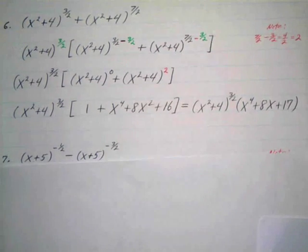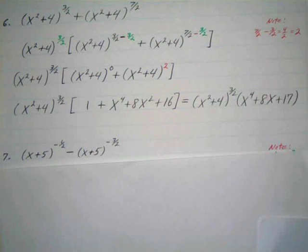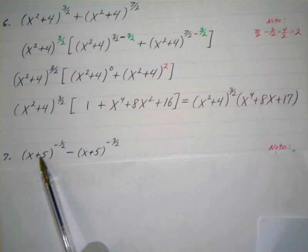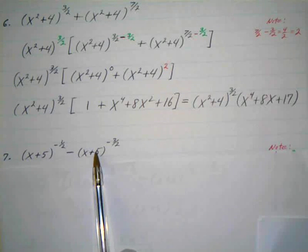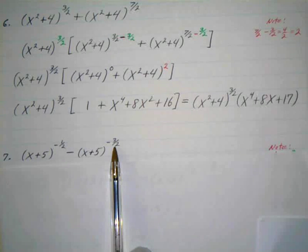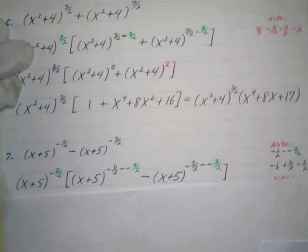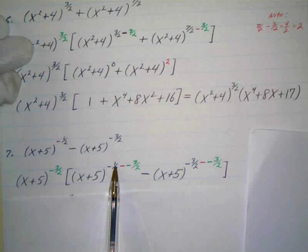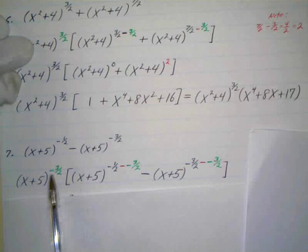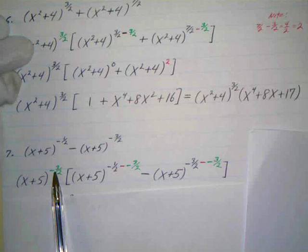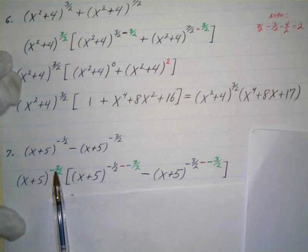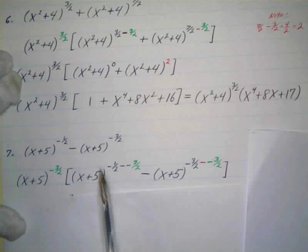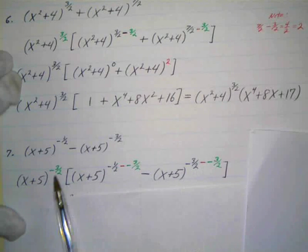Number seven — now we have negative signs, so it gets interesting. When we have negative signs, you have double negatives, so be careful. My common base is x plus five. I have a negative one-half and a negative three-halves. Which is least? The farthest to the left on the number line — negative three-halves. So that's what I'm factoring out. I have x plus five to the negative one-half minus the negative three-halves, and x plus five to the negative three-halves minus the negative three-halves.